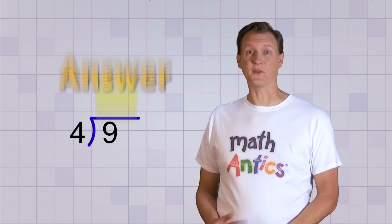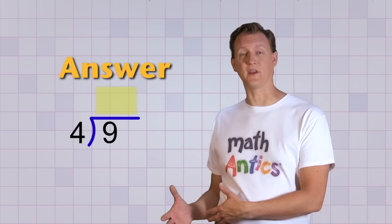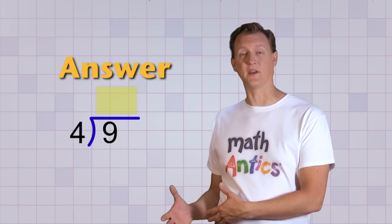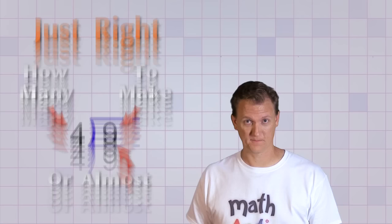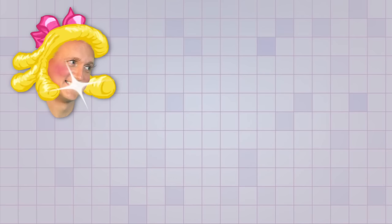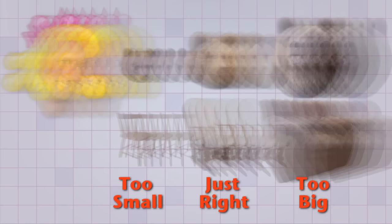The next step is the most important step because it's where you figure out the answer. And to figure out the answer, which is how many you'll end up with in each group after you divide, you have to ask yourself a really important question involving the other two numbers. The question is, how many 4's will it take to make 9 or almost 9? And the key to answering this question is for the number to be just right. Do you remember the story of Goldilocks and the three bears? How one chair was too big and one chair was too small, but the other chair was just right?